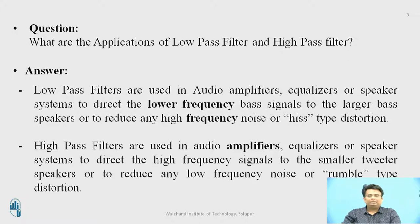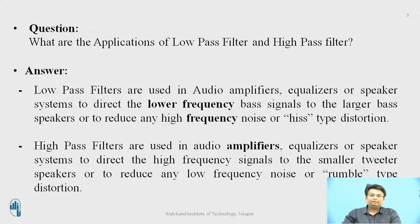The high pass filters are used in audio amplifiers, equalizers, and speaker systems to direct the high frequency signal to the smaller tweeter speakers, or to reduce any low frequency noise signal. These low frequency noise signals are called rumble type distortion.